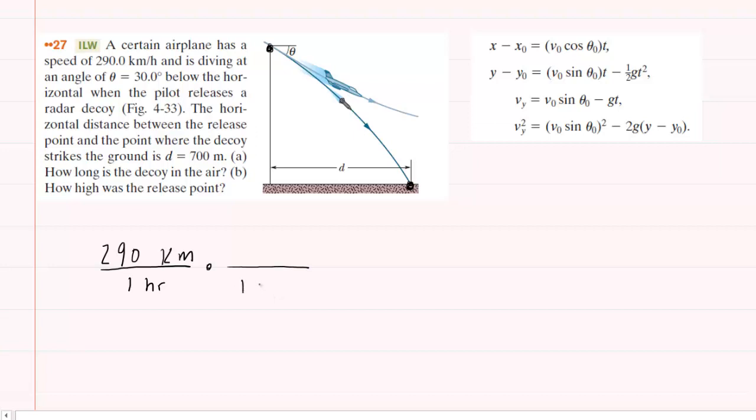Now perhaps we all know that 1 kilometer is equivalent to 1,000 meters. And you notice that we set up the conversion factor in this way so that when we multiply, the kilometers will cancel, leaving us with meters. We may also know that 1 hour is equivalent to 3,600 seconds. And again, if we set up the conversion factor in that manner, the hours will cancel and the final unit will be meters per second.